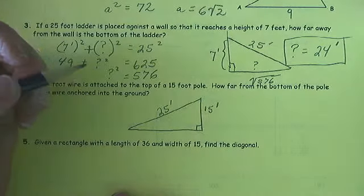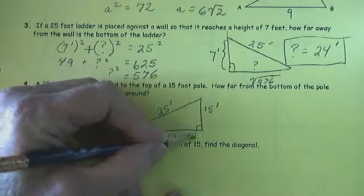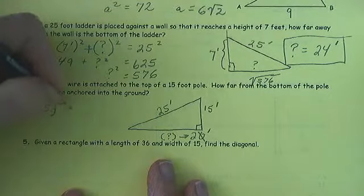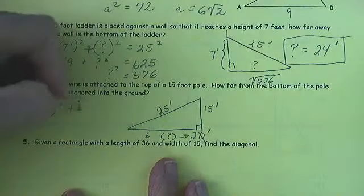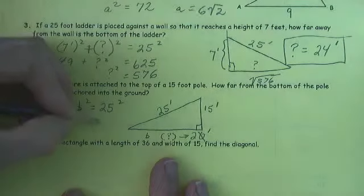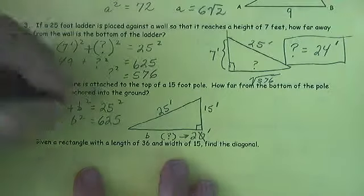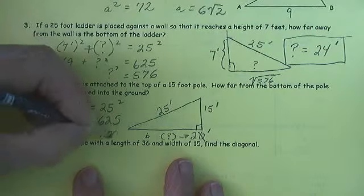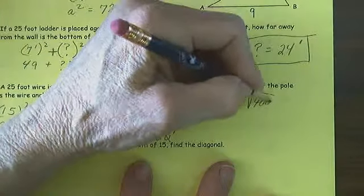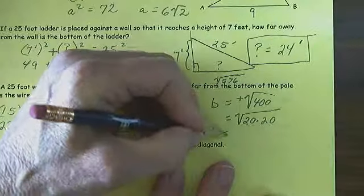I hypothesize that this is going to be 20 feet. They want us to find this. I'm just going to tell you I think it's going to be 20 feet. Let's see whether I'm right. 15-squared plus b-squared equals 25-squared. 15-squared is 225. 25-squared is 625. So now I subtract 225 from each side. b-squared equals 400. b is equal to the positive square root of 400. It turns out 400 is the same as 20 times 20. So b is equal to 20 feet.